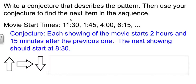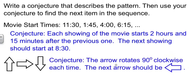And we can even do this symbolically. If we look at what we have, we have an arrow pointing upward, an arrow pointing right, an arrow pointing down. What's happening is it's turning clockwise each time. So our conjecture is that the arrow is rotating 90 degrees clockwise. So the next arrow should point to the left.